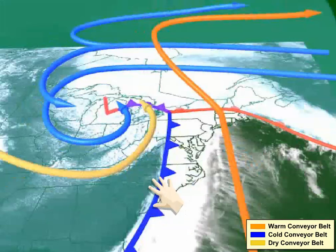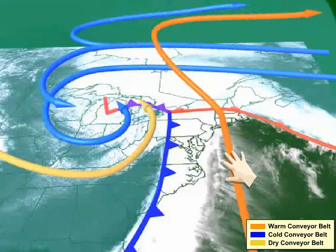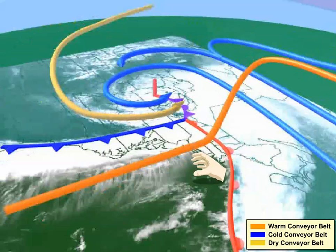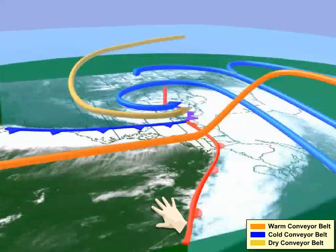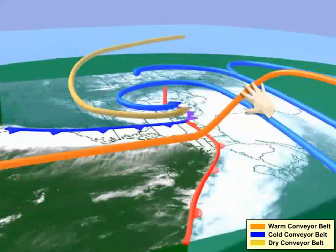Let's start with the warm conveyor belt, which transports warm, moist air northward through the warm sector. The warm conveyor belt gradually rises during its northward trek, and notably overruns the cold air north of the warm front, which creates stratiform clouds and precipitation.